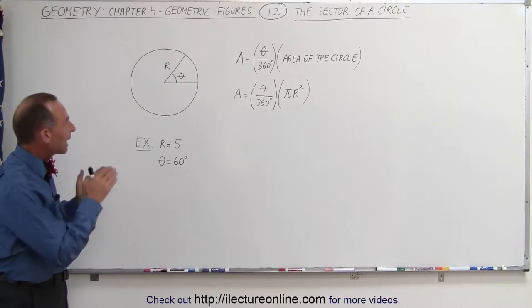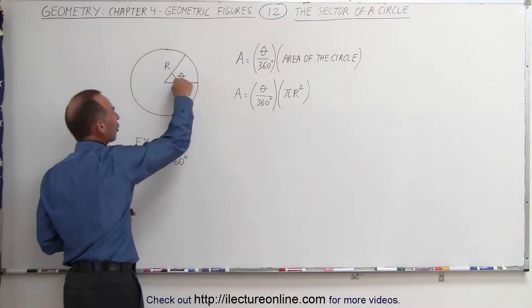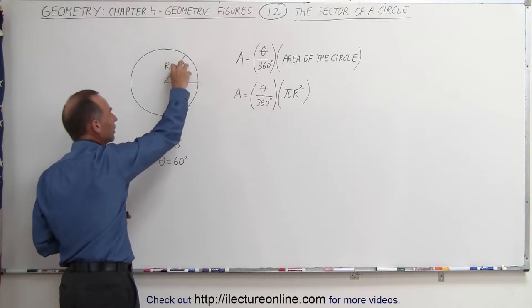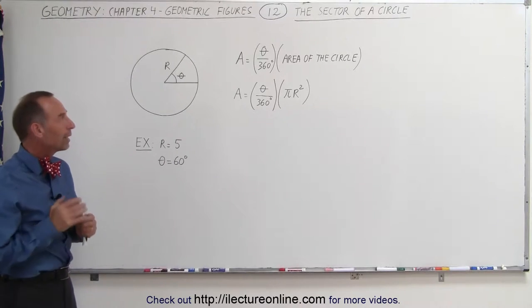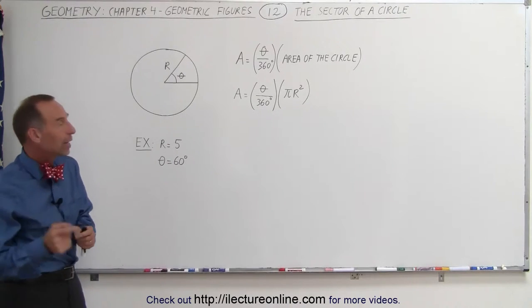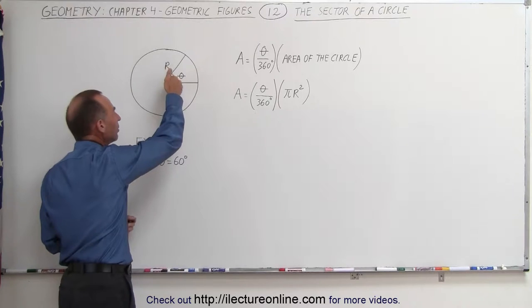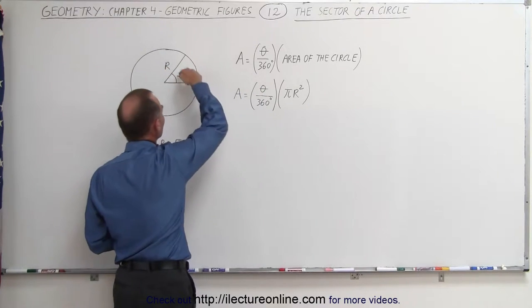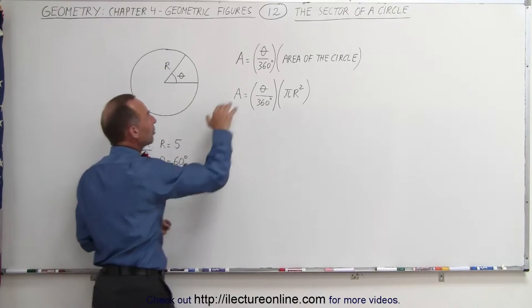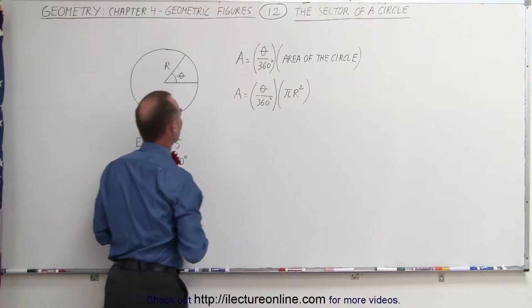If you want to know the area of that, and if by the way this section here is called a sector of a circle, if we need to find the area of the circle, we can find that by taking the ratio of the size of the angle to the circle of 360 degrees, and multiply that times the area of the circle.